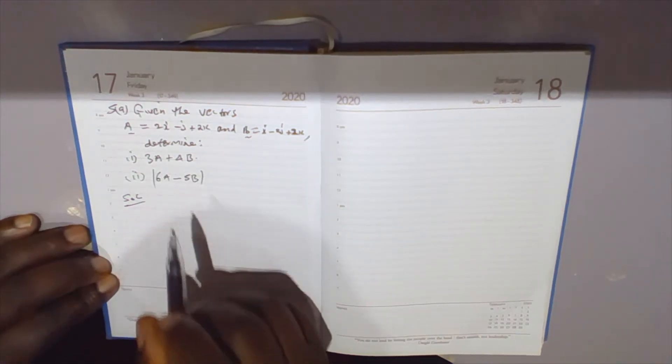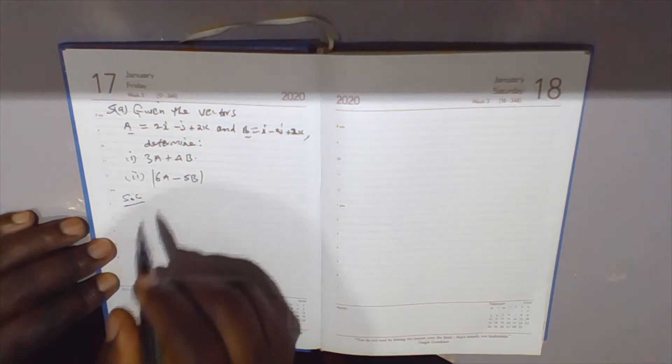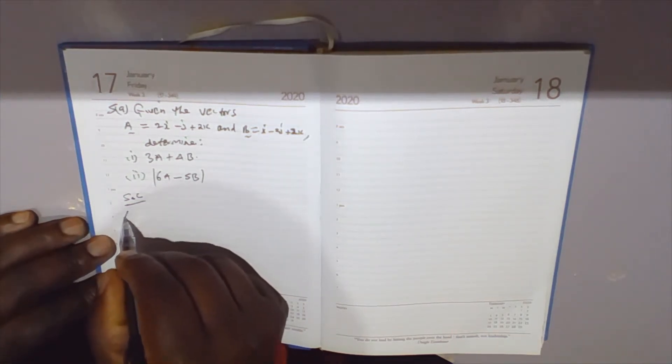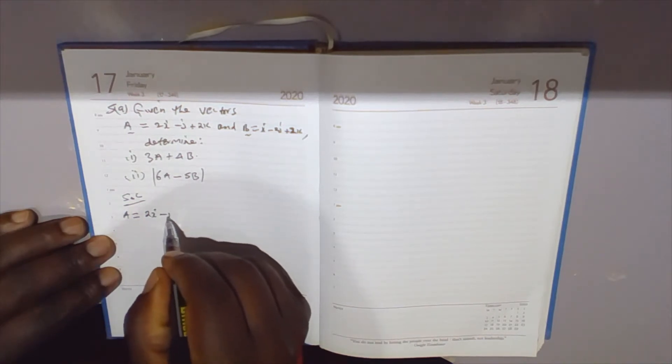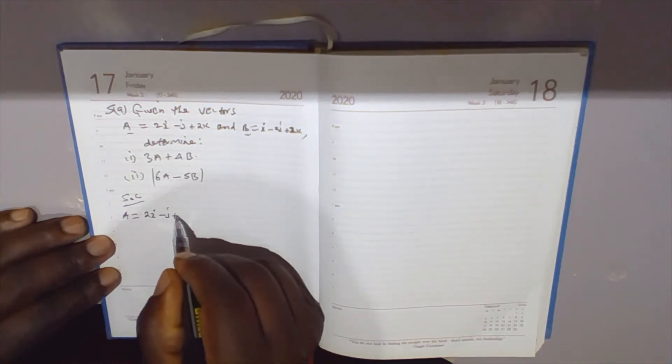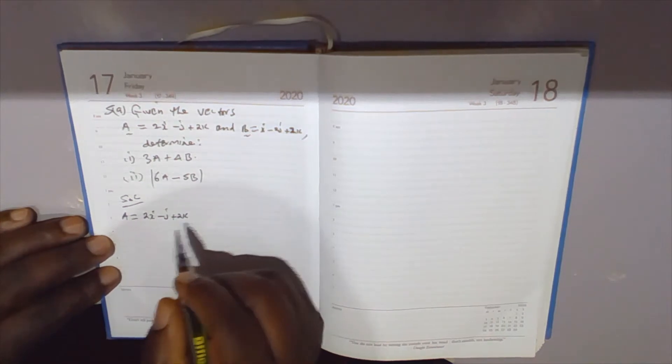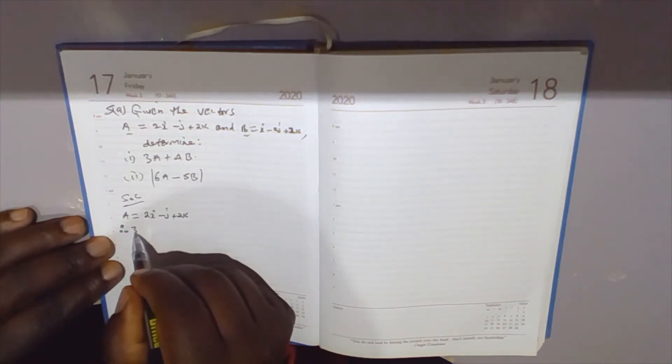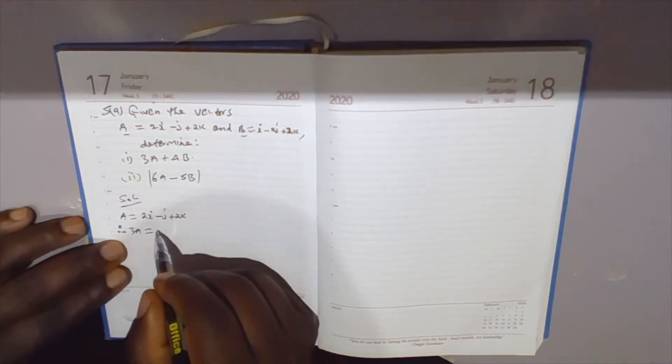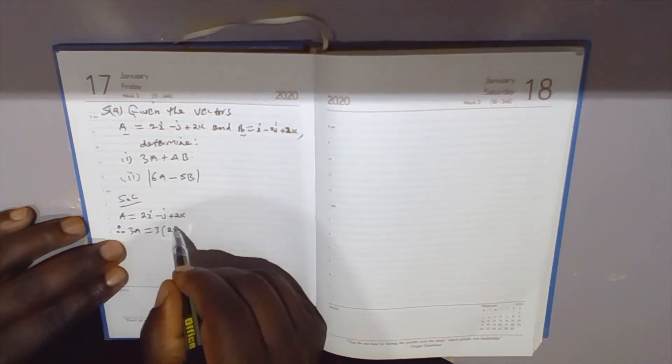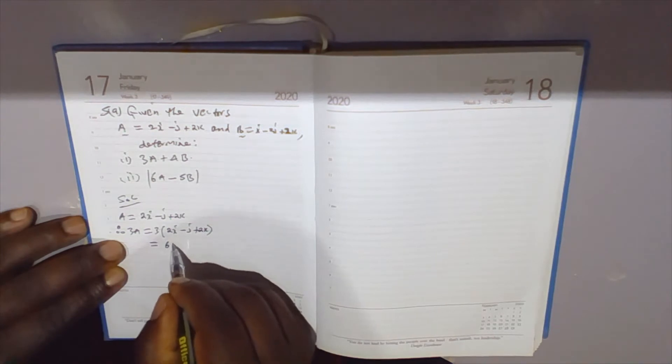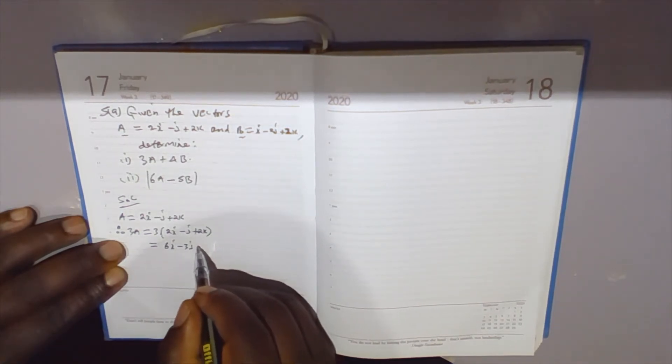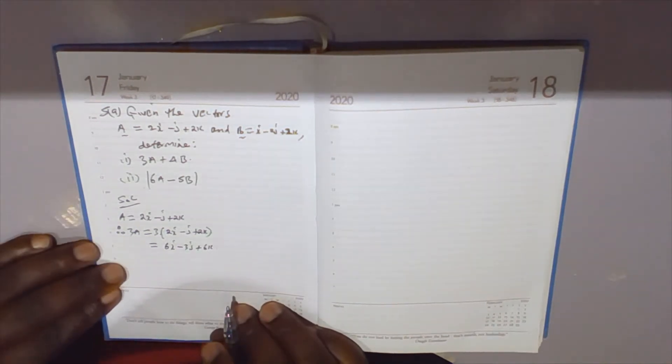Solution: We have vector a equals 2 units in the x direction minus 1 unit in the y direction plus 2 units in the z direction. Therefore, 3a equals 3 times (2i - j + 2k), which equals 6i minus 3j plus 6k.